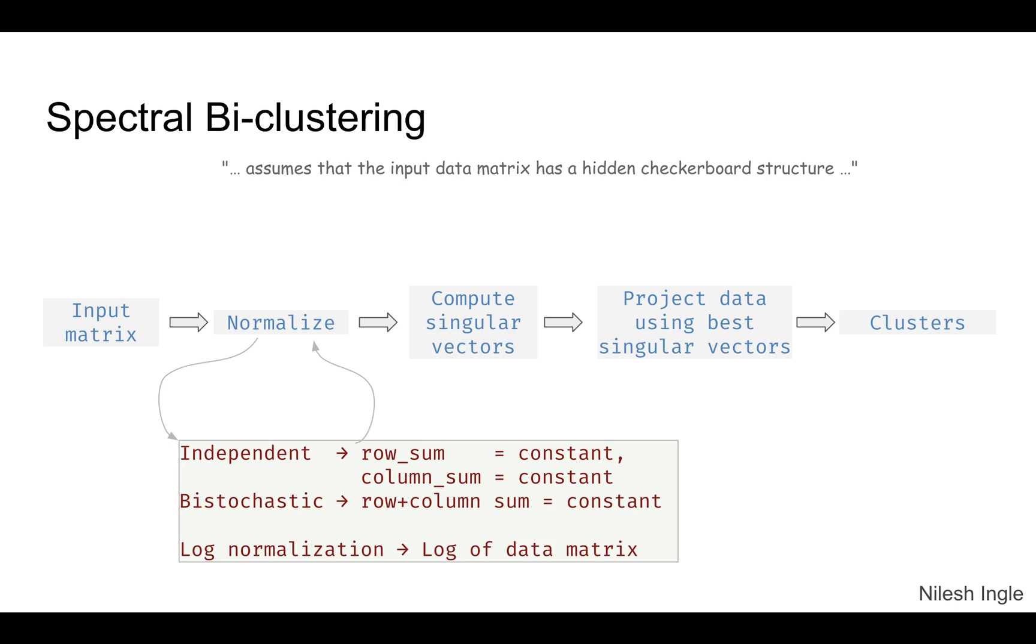The next method is spectral biclustering. Here, the method assumes that the input data matrix has a hidden checkerboard structure. To get the data closer to that structure, there's a normalizing step performed. There are three types of normalizations listed in the docs: one is independent, the second is bistochastic, and the third is log normalization. In the first one, the row sums and column sums are brought to a constant value. In bistochastic, both row and column sums are brought to a constant value. In log normalization, you perform log transformation of the data, which is then used for the next steps. The next step is to compute singular vectors and then project the data using the best singular vectors to finally do the clustering.